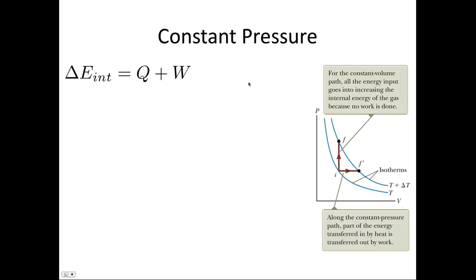So now let's look at the constant pressure case. So this is the case where we're going from I to F dash, which is a bit more complicated because we now have work done, as well as the heat flow. So the change in internal energy is equal to nCp delta T.